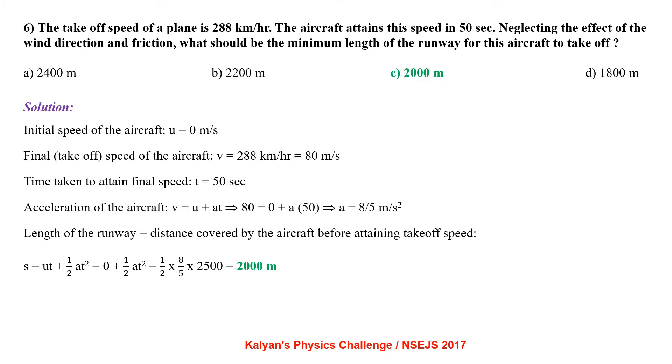The takeoff speed of a plane is 288 km per hour. The aircraft attains this speed in 50 seconds. Neglecting the effect of wind direction and friction, what would be the minimum length of runway for this aircraft to take off? Initial speed of the aircraft is 0. Final takeoff speed of the aircraft is 288 km per hour which comes out to be 80 m per second. Time taken to attain this speed is 50 seconds.